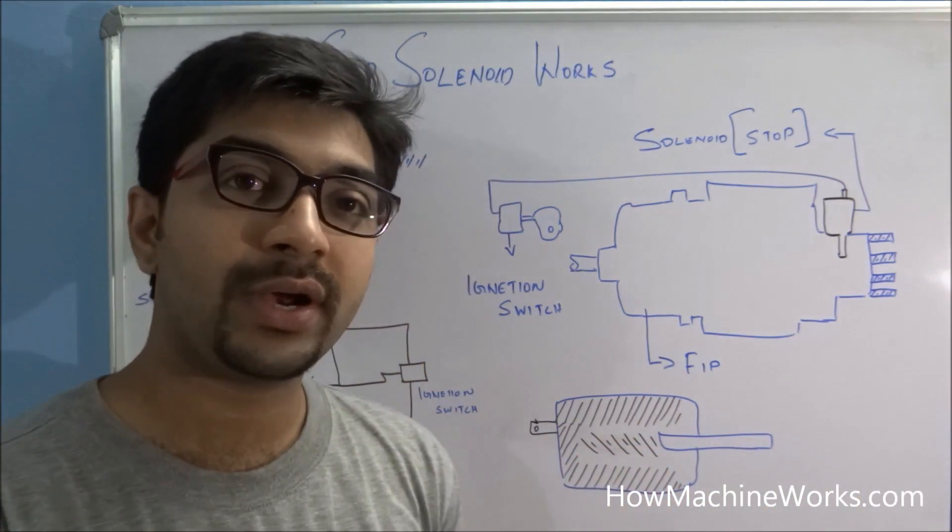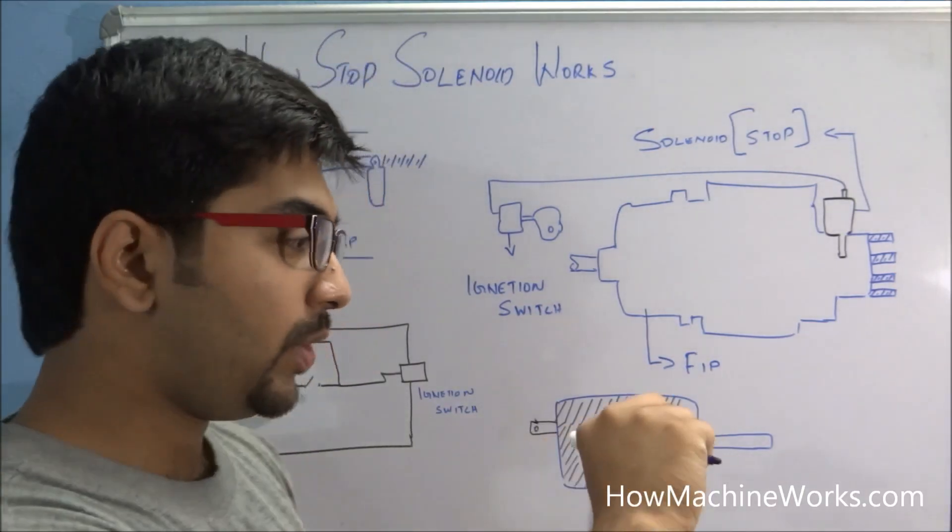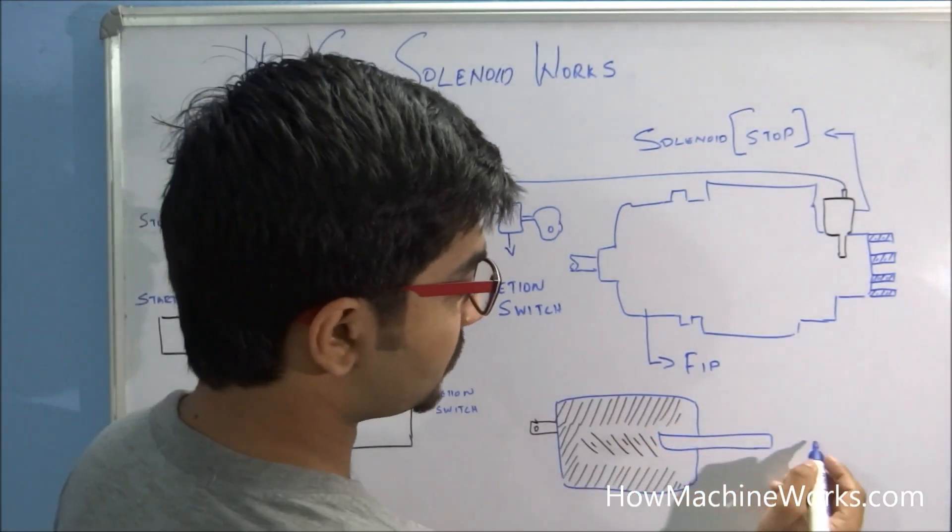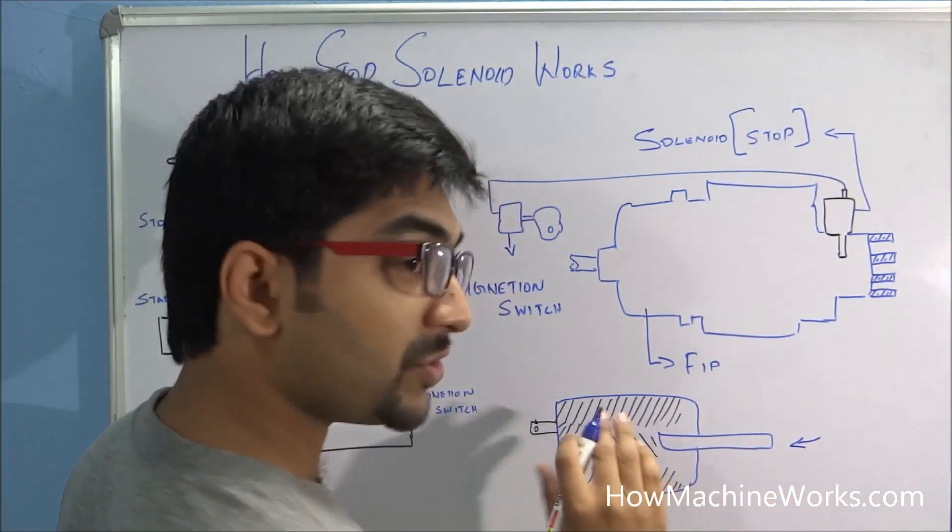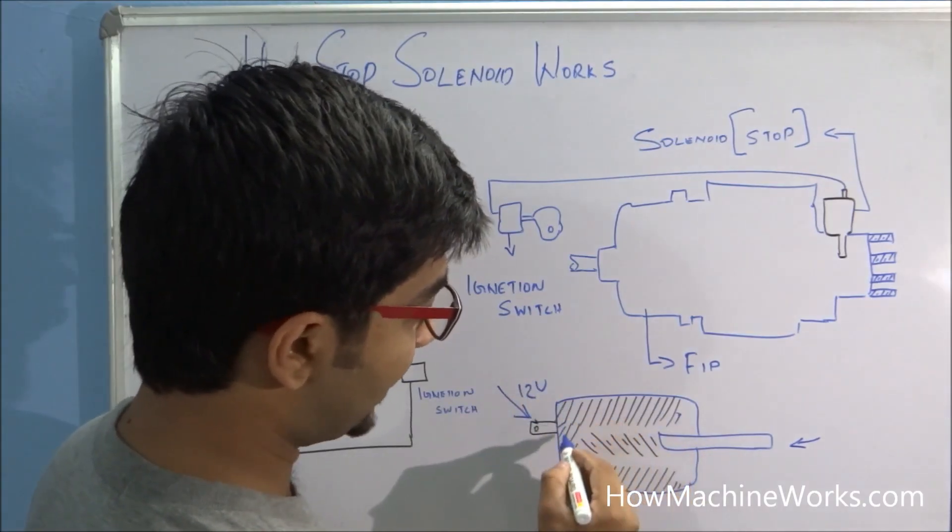So the function of the stop solenoid is to stop or start the vehicle with the help of the ignition key. When you turn the ignition key, this particular shaft moves inside. Because when you turn the ignition key, the 12 volt reaches the electromagnet over here.